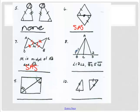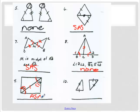Over here on number eight, BC is congruent to CD. I know AC is congruent to itself by reflexive. And because angle one is congruent to angle two, angle ABC is congruent to angle ADC. The problem is this gives us side, side, angle — we don't know anything about the two middle angles, so this one is actually none. For number nine, we have an angle congruent to an angle, a side congruent to a side, and a reflexive side in the middle — angle, side, angle. Over here, a side congruent to a side, another side congruent to another side, with an angle in the middle — side, angle, side.